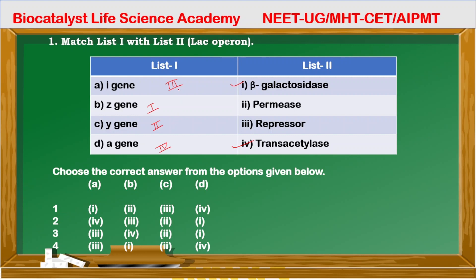Now let's see what matches. A matches with third, B matches with first, C matches with second, and D matches with four. The correct option is option number four.